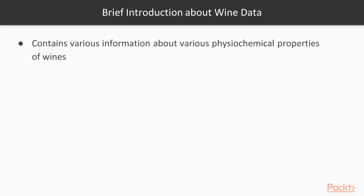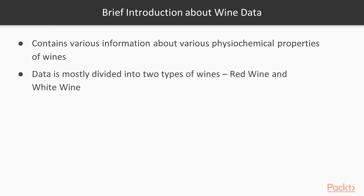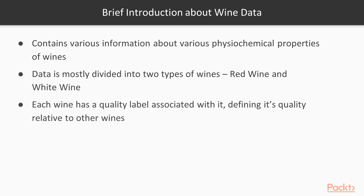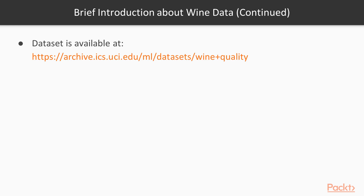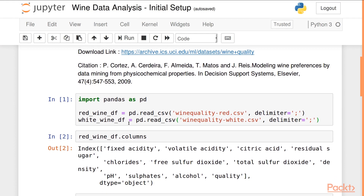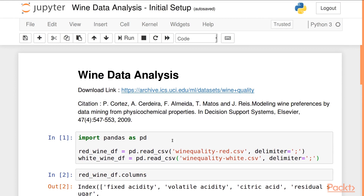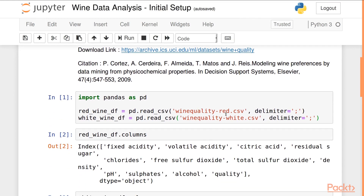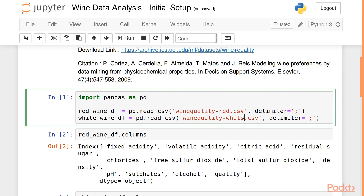The wine data set contains information about various physiochemical properties of wines. The data set contains information about two types of wines: red wine and white wine. Each wine has a quality label associated with it, which defines the relative quality of the wine on a scale of 0 to 10. The data set consists of two files — one for red wines and one for white wines.